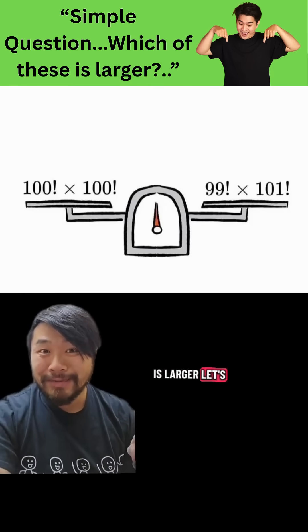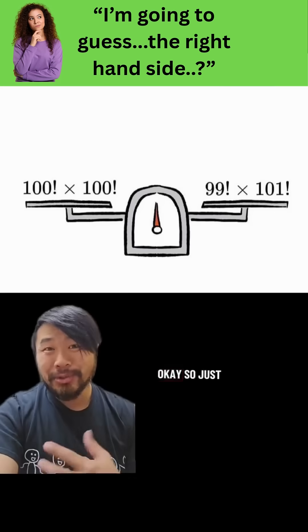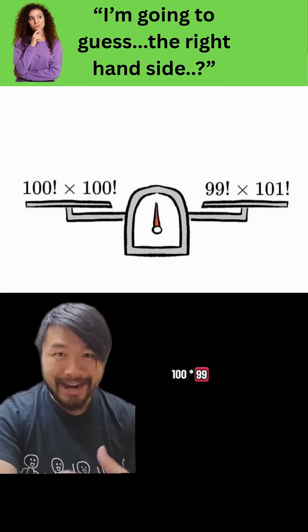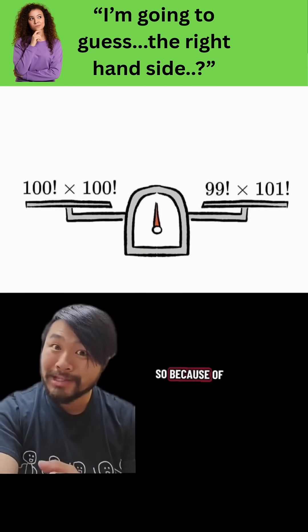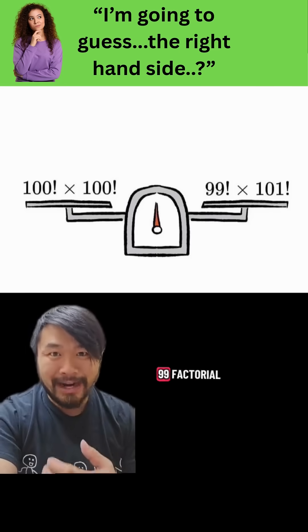Which of these is larger? Let's find out, but first, make a guess. Just in case you didn't know, 100 factorial is 100 times 99 times 98, all the way down to 1. So because of this, we can rewrite 100 factorial as 100 times 99 factorial.